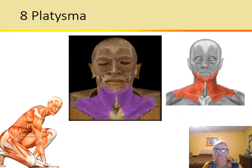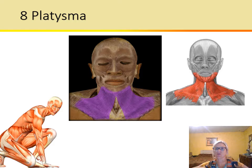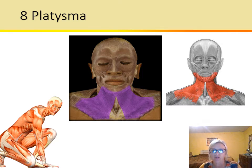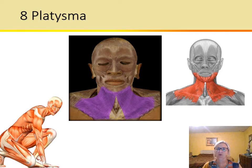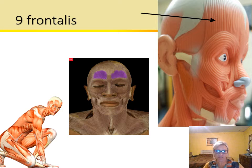The platysma — 'platysma' refers to flat, so think flat. This is a very flat, broad sheet-like muscle. It draws the corners of the mouth downward and helps in depressing or lowering the mandible.